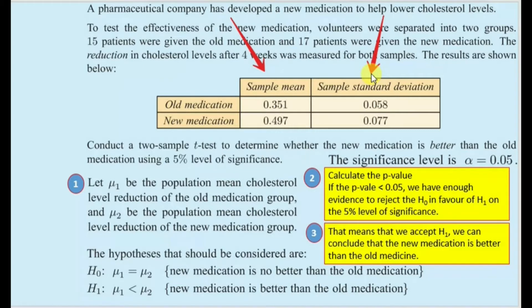Conduct a two-sample t-test to determine whether the new medication is better than the old medication using a 5% level of significance. In the examination, this value would be given to you. The significance level alpha is equal to 0.05.